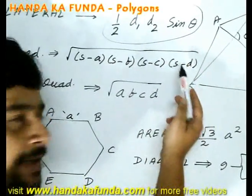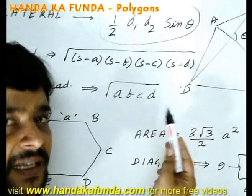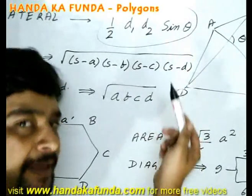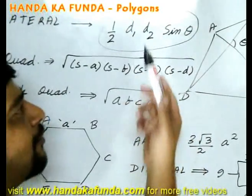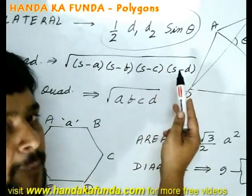Think about it. In a rhombus, what happens? Theta is 90 degrees, so its area is half d1 into d2. In a kite, what happens? Theta is once again 90 degrees, so again you can use simply half d1 into d2 because sine 90 is 1.